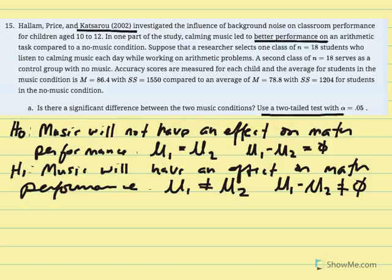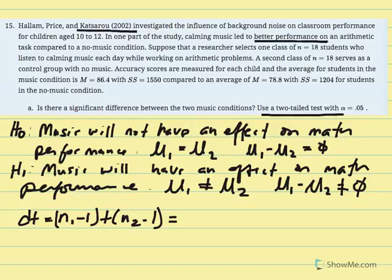To test significance, we need the critical t value, which requires degrees of freedom. df equals N1 minus 1 plus N2 minus 1. Each sample had 18 individuals: 18 minus 1 equals 17, so 17 plus 17 gives us 34 degrees of freedom.